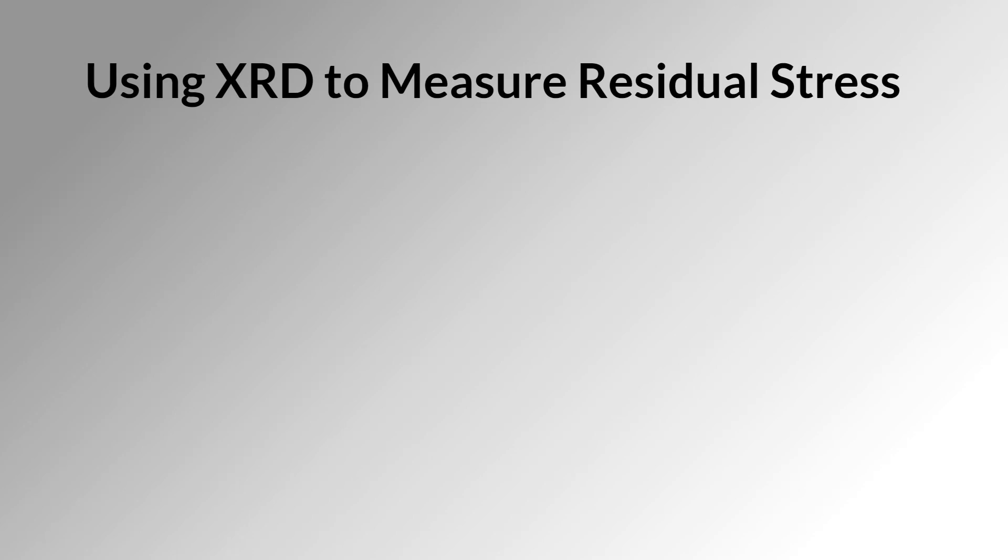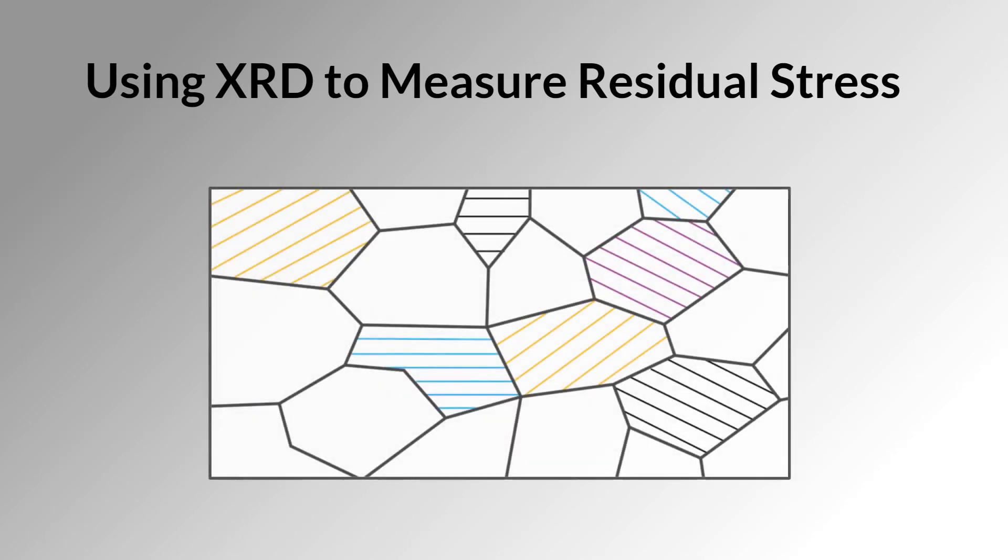Polycrystalline materials such as metals are made up of grains, or individual crystallites, that are oriented in different directions.